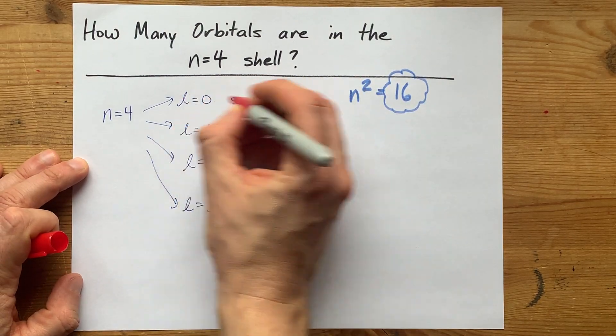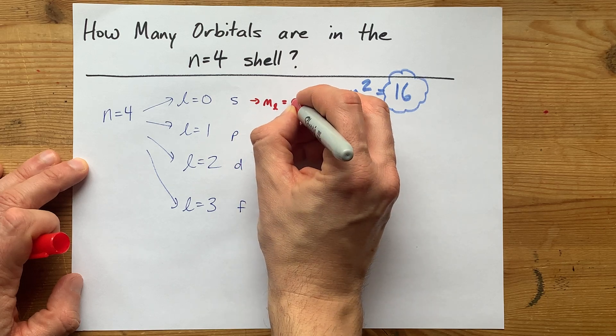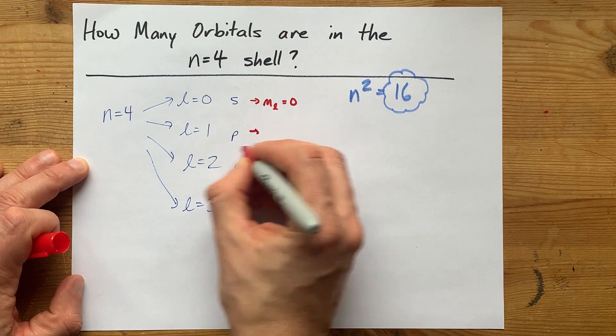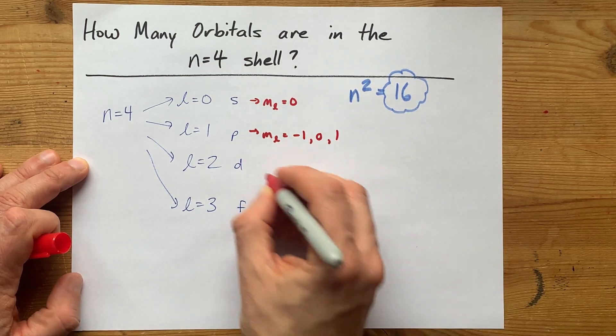I want to point out that once l is 0, then ml itself is limited to just 0. When l is 1, your ml can be negative 1, 0, or 1.